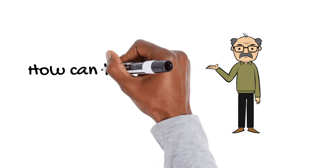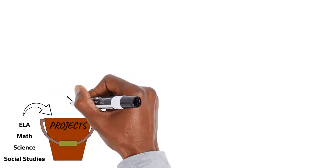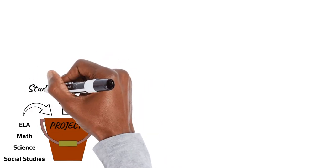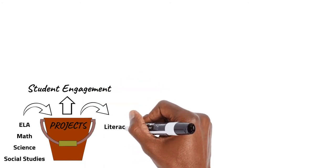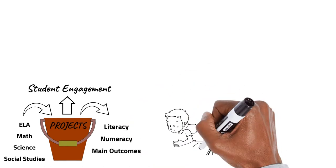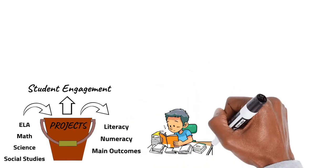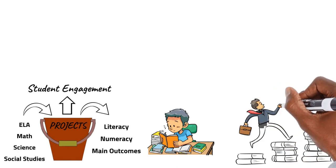How can there be time for this? Since projects encompass multiple traditional school subjects, we can accomplish a lot while also keeping student engagement high. We will always ensure literacy and numeracy are at the forefront and will cover the main outcomes in other curriculums. This means that we may not cover every single outcome, but students will have a much better depth and understanding in the outcomes we do address.